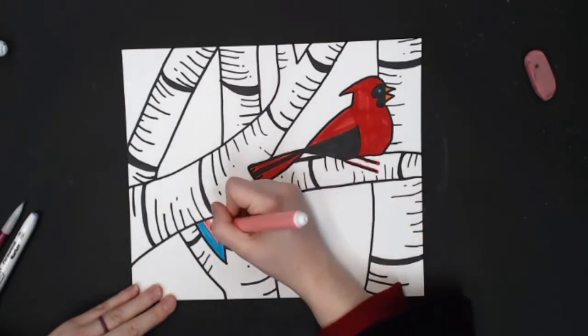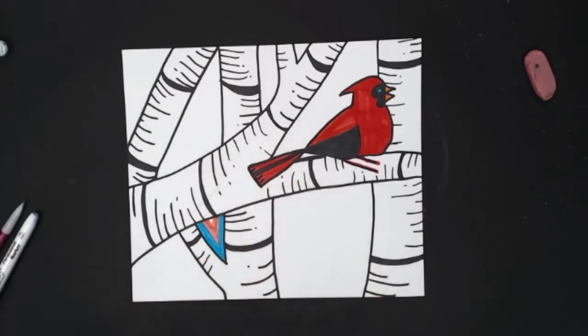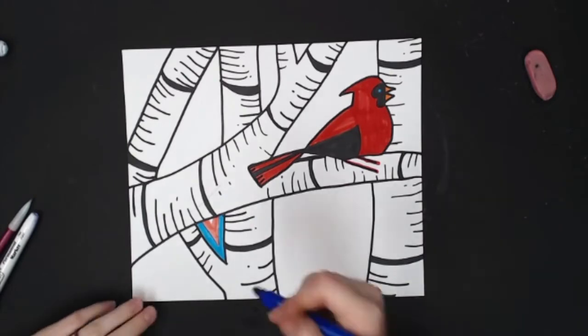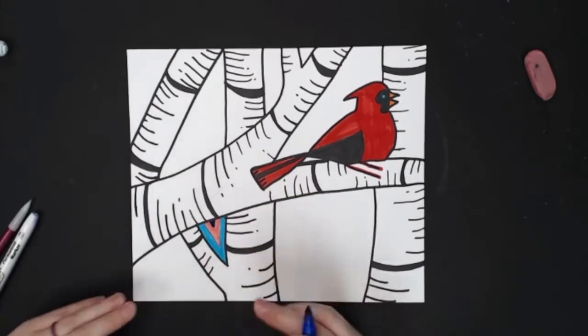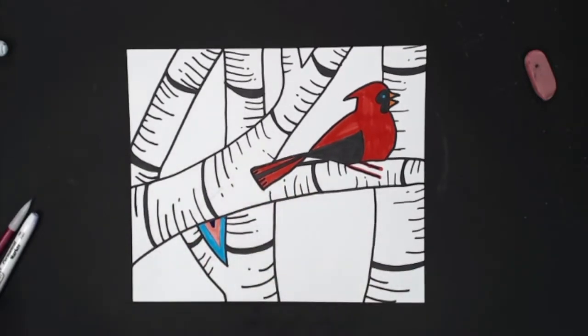I'm going to fill in the V of the pink. And then I have a little teeny tiny spot. And I'm going to use dark blue. And I'm going to draw a V. And just fill it in. So you're following the lines of the tree in the negative space.